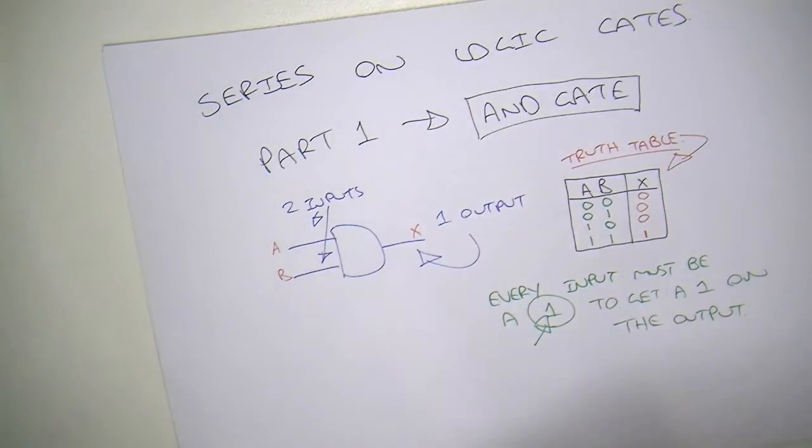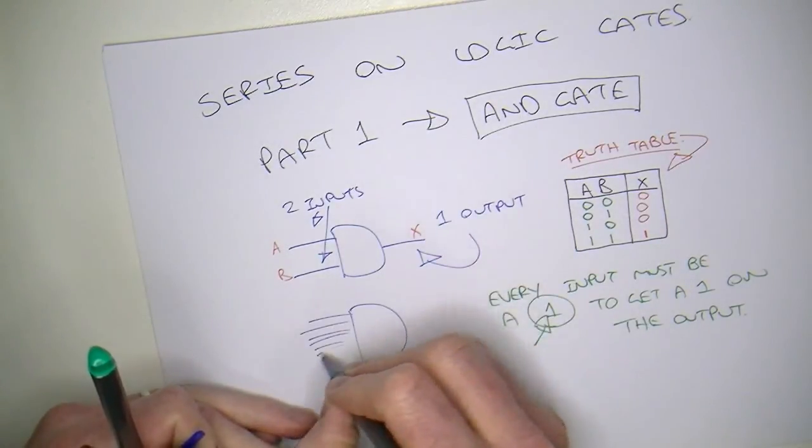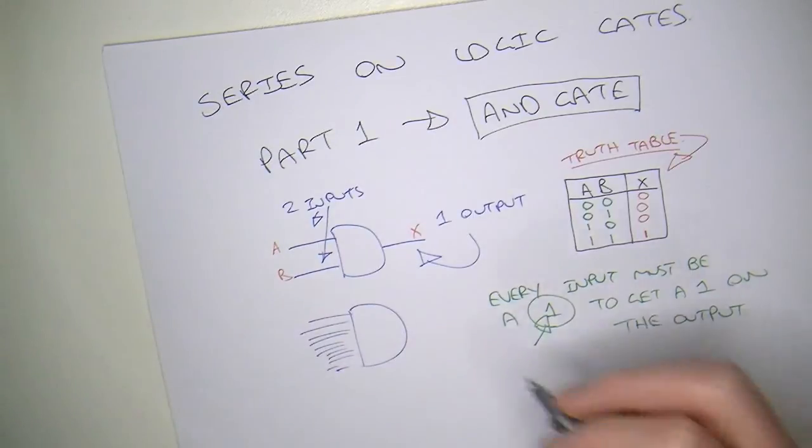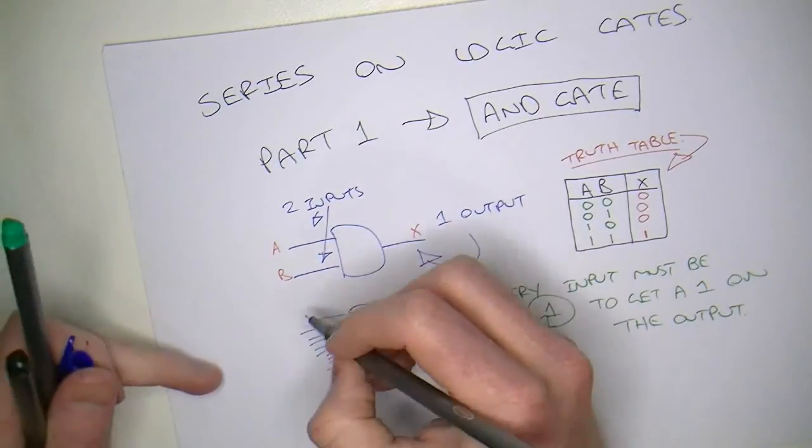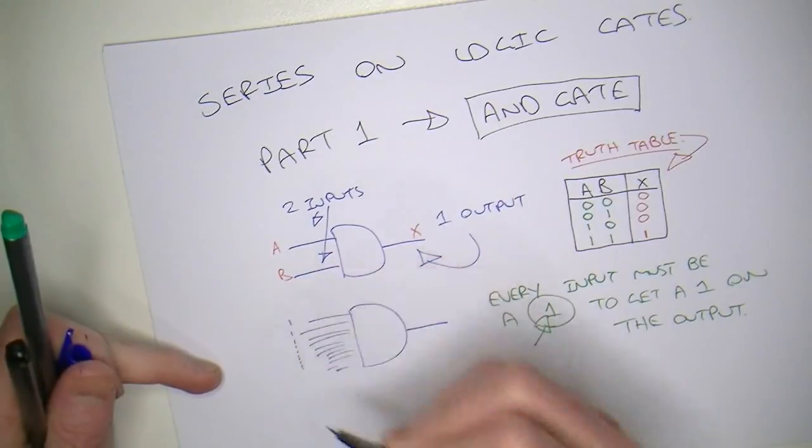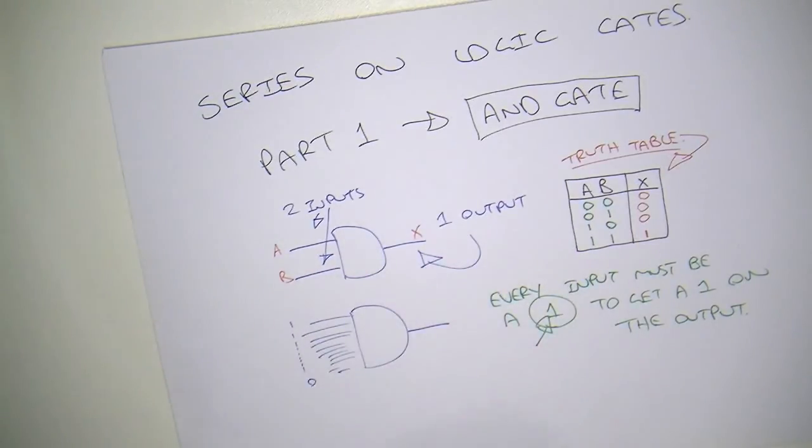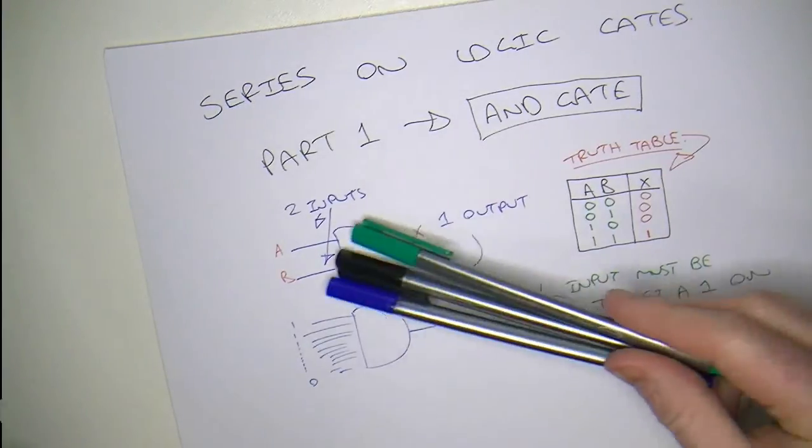We could have an AND gate with 100 inputs, 1 output. If 99 of these inputs are all logic 1s, but one of them was a 0, we would still get a 0. Because the rule is, every single input must be a 1 in order to get a 1. So, let's have a look at a really simple application of this.